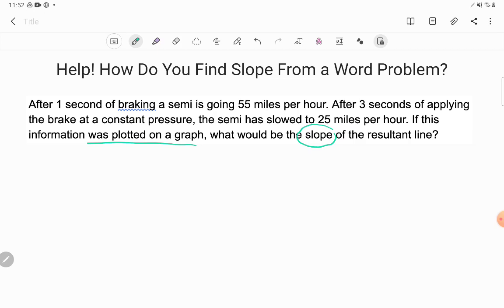Here I'm looking at a word problem, but they did say if this information was plotted on a graph, so you could plot it on a graph to try to figure it out. But what I notice is that they've actually hidden in this word problem, they've given me points. Let me show you what I mean. It says after one second of braking, a semi is going 55 miles an hour. So they brake for one second, 55 miles an hour. And then look at this same relationship.